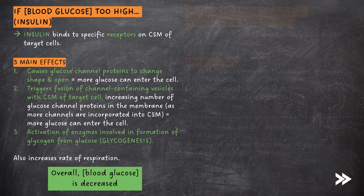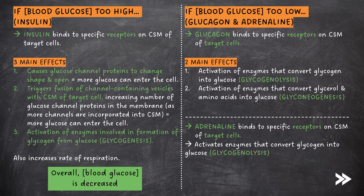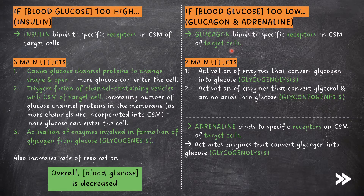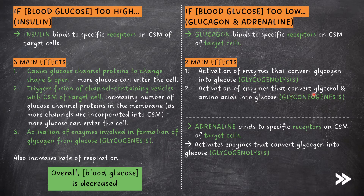If the blood glucose concentration is too low, alpha cells can detect this and secrete glucagon. Glucagon binds to specific receptors on the cell surface membrane of target cells. This has two main effects: first, it activates enzymes that convert glycogen into glucose, known as glycogenolysis; and it also activates enzymes that convert glycerol and amino acids into glucose, i.e. gluconeogenesis.